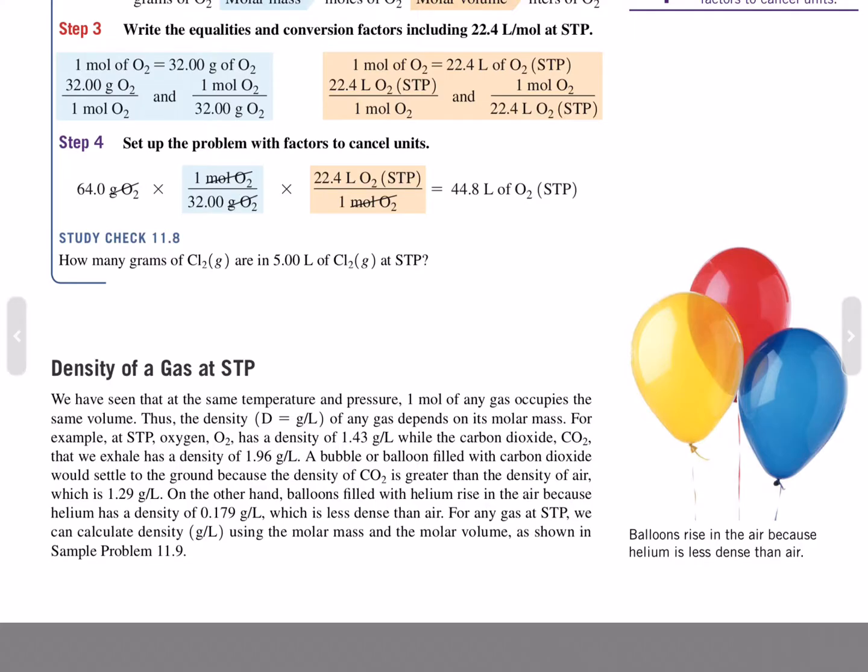oxygen has a density of 1.43 grams per liter, while the carbon dioxide that we exhale has a density of 1.96 grams per liter. A bubble or a balloon filled with carbon dioxide would settle to the ground because the density of carbon dioxide is greater than the density of air, which is 1.26 grams per liter. On the other hand, balloons filled with helium rise in the air because the helium has a density of 0.179 grams per liter, which is less dense than air. For any gas at STP, you can calculate the density using the molar mass and the molar volume, as shown in sample problem 11.9.